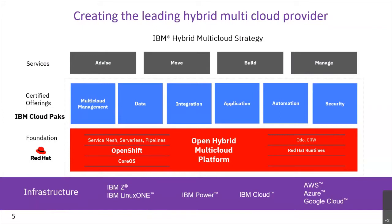IBM wants to be the leading hybrid multi-cloud provider together with Red Hat, based on the hybrid multi-cloud OpenShift mindset. To build that multi-cloud platform, we need to be able to run on all hardware. The infrastructure includes IBM Z, Linux One, Power, IBM Cloud, AWS, Azure, and Google Cloud — OpenShift runs on all of these. It's the foundation, and if it is the foundation, it comes with a baseline you can build on top of.